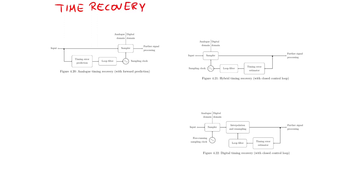The first one is a pure analog timing recovery. It has a component which predicts the timing error and then gives this information to the sampling clock so that it can adjust its phase.